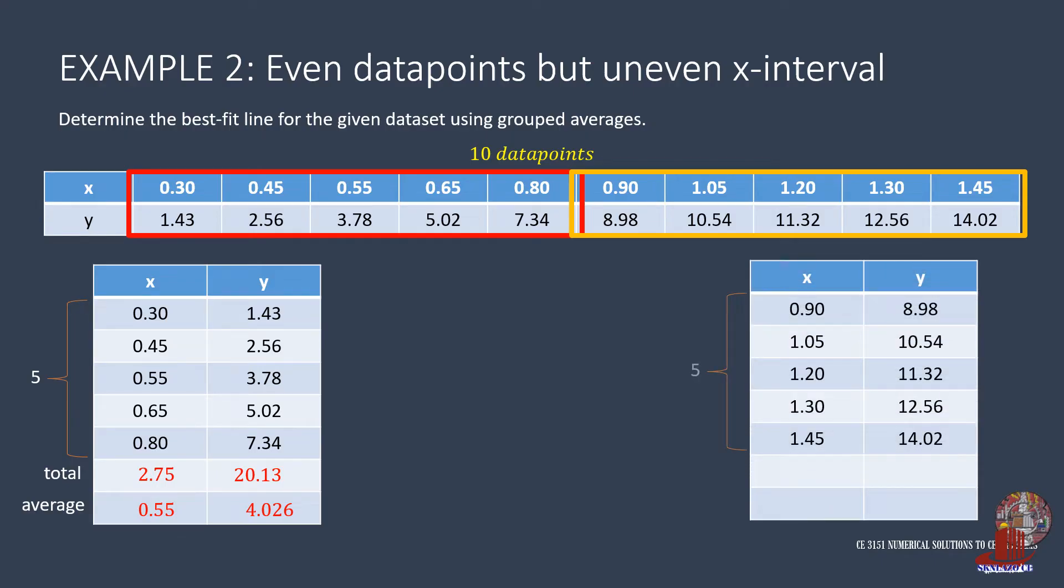The second group has x values of 0.9, 1.05, 1.2, 1.3, and 1.45, having a total of 5.9. Divide this by 5 to have x average as 1.18. Y is also added to get 57.42, and dividing this by 5 gives the average which is 11.484.